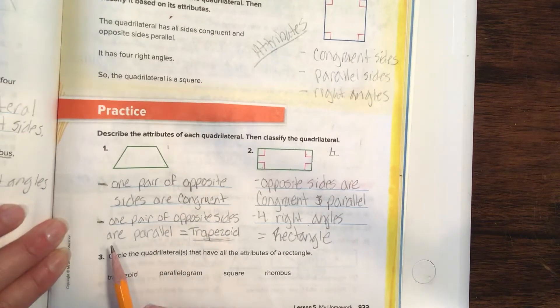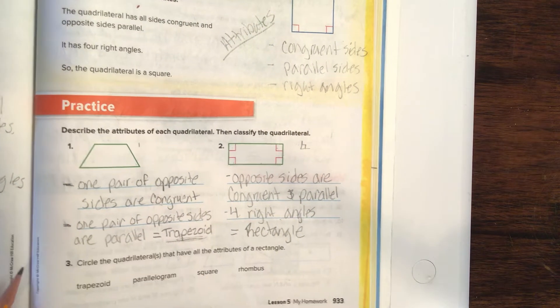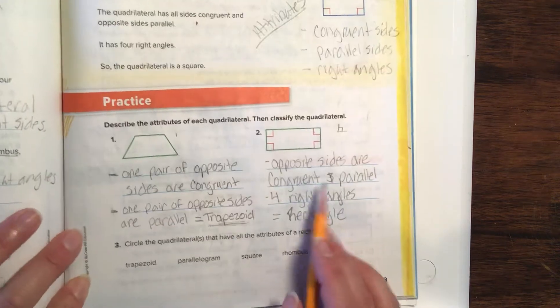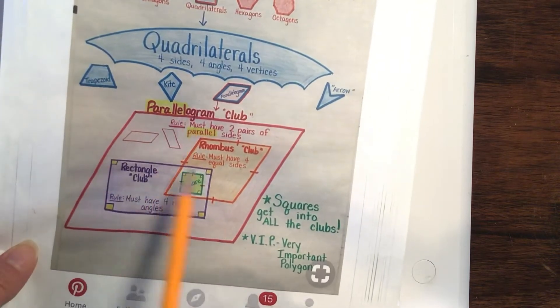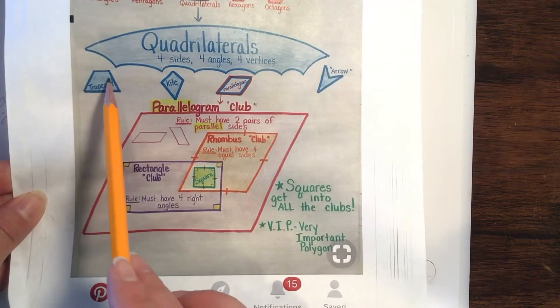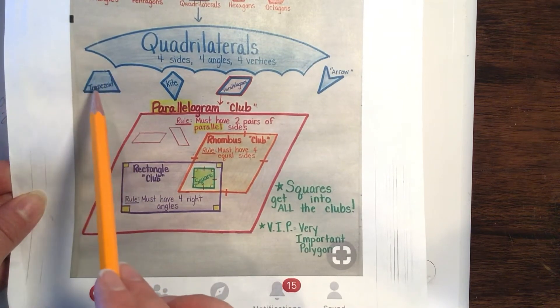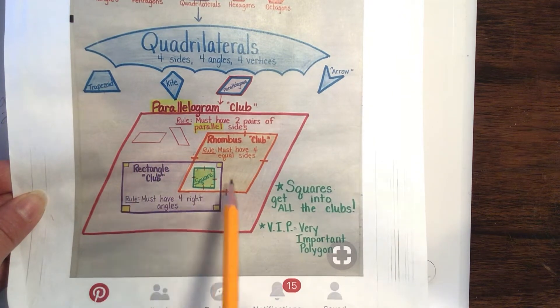Let's move to number three. We are circling the quadrilaterals that have all of the attributes of a rectangle. We have a trapezoid, parallelogram, square, and rhombus. What ones have all the attributes? Well, trapezoid's not going to be in there because he only has one pair of parallel sides. Rectangle, we've decided, has two.